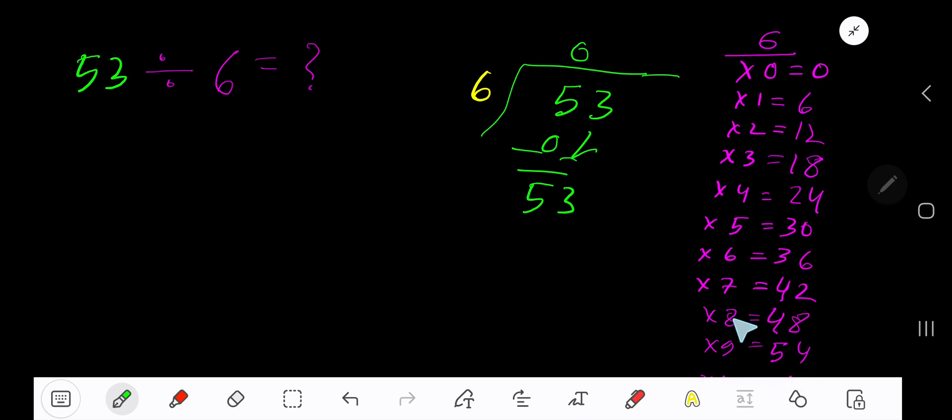9 times 54, which is greater. So 8 times. 8 times 6, that gives you 48. Subtract, you are getting what? You are getting 5.